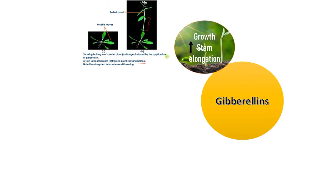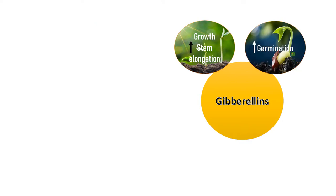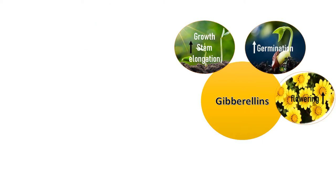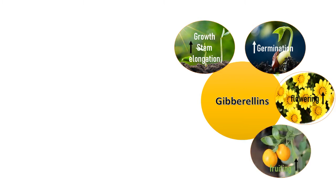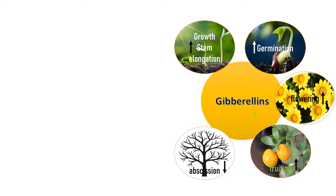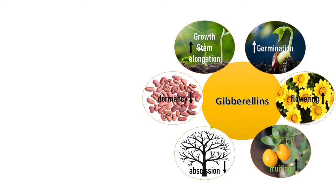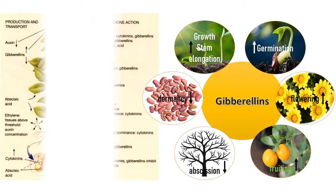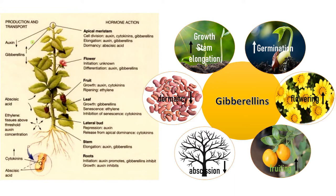Gibberellin promotes germination and flowering in many plants, promotes fruiting just like auxin, and prevents abscission and senescence as it is a growth promoter. It breaks dormancy as it promotes germination. Regarding transport, gibberellin transport has no polarity — it moves both upwards and downwards, unlike auxin where transport is polar.